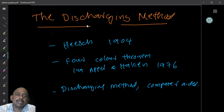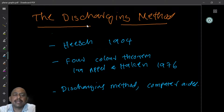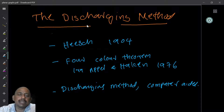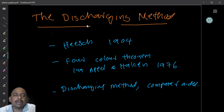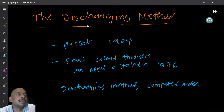After this, the discharging method was used in a very famous paper by Kenneth Appel and Wolfgang Haken, who proved in 1976 a very long-standing conjecture called the four color conjecture. This four color conjecture came from the following question. There was, I think, around 1850 or so — Francis Guthrie — he was a map maker who asked the following question.